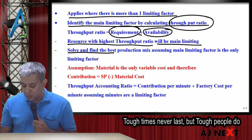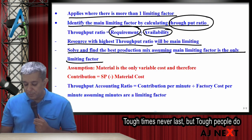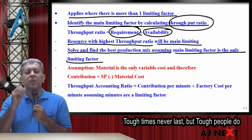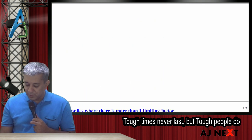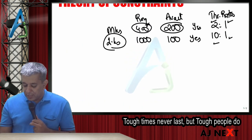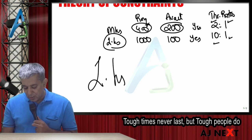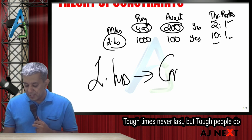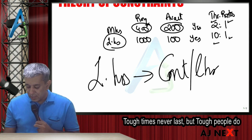Now solve and find the best production mix, assuming the main limiting factor is the only limiting factor. If labor hours is your only limiting factor, then what will you do for ranks? Contribution per labor hours.